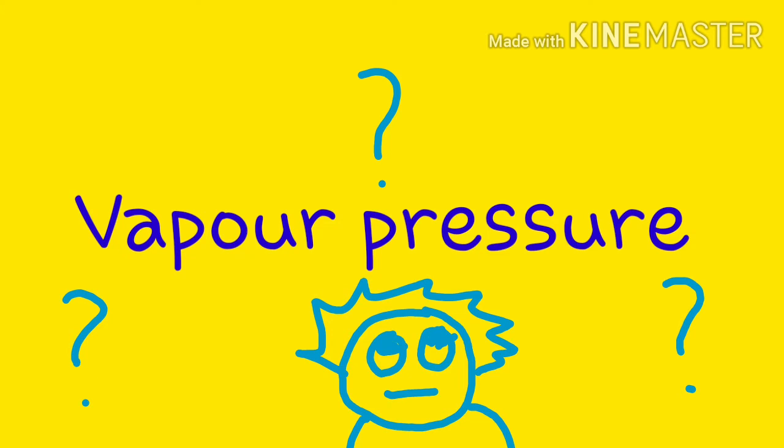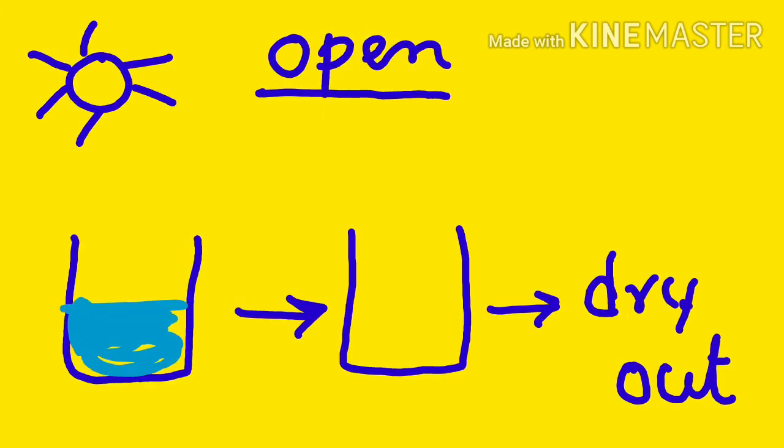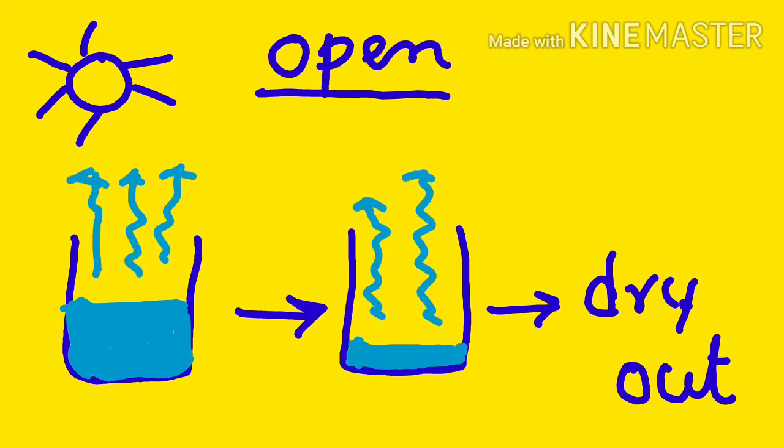Now let's take an example to understand this better. Suppose we take some water in an open container and leave it on the ground for a day or two. What will happen? Obviously it will dry out. Why? Because the liquid evaporates. Here individual water molecules gain enough energy to escape from the liquid in the form of vapor.